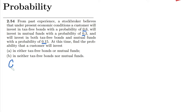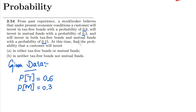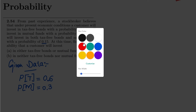First, let's write the given data. A customer investing in tax-free bonds is represented as T, so the probability of T is 0.6. Investing in mutual funds is represented as M, and the probability of M is 0.3. The probability of investing in both tax-free bonds and mutual funds — the intersection — is 0.15.